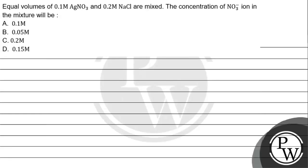Let's read this question. The question says: equal volumes of 0.1 molar Hg(NO₃)₂ and 1.2 molar NaCl are mixed. The concentration of nitrate ion in the mixture will be — Option A: 0.1 molar.